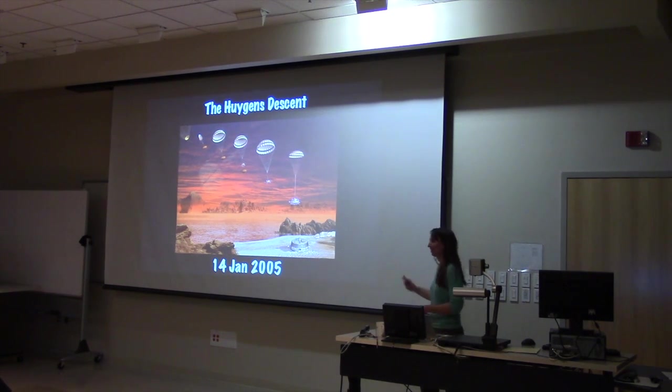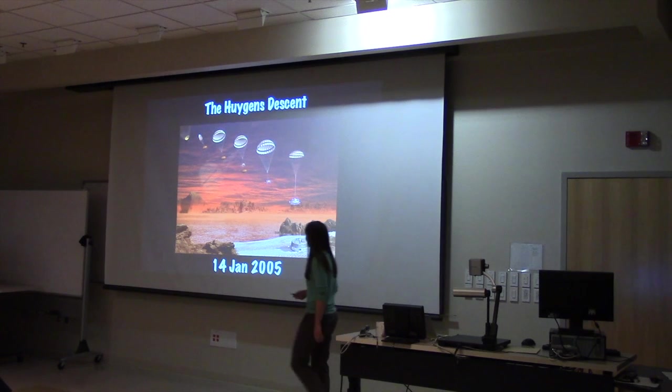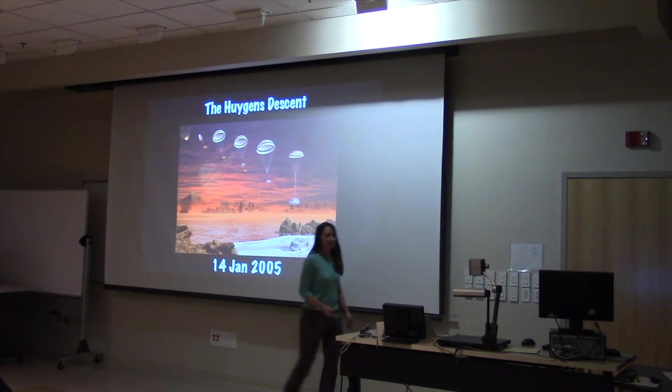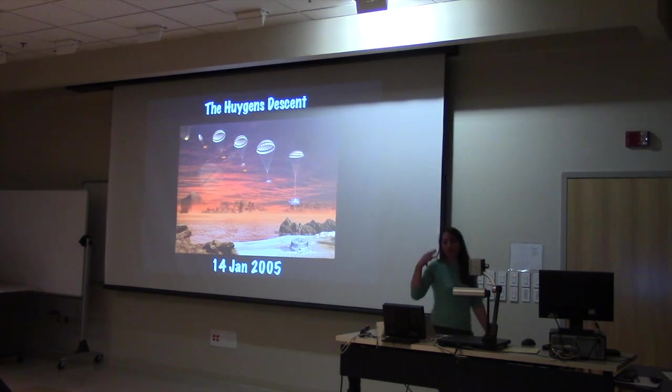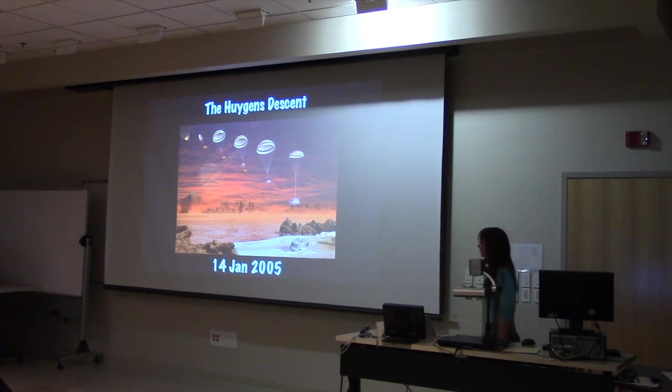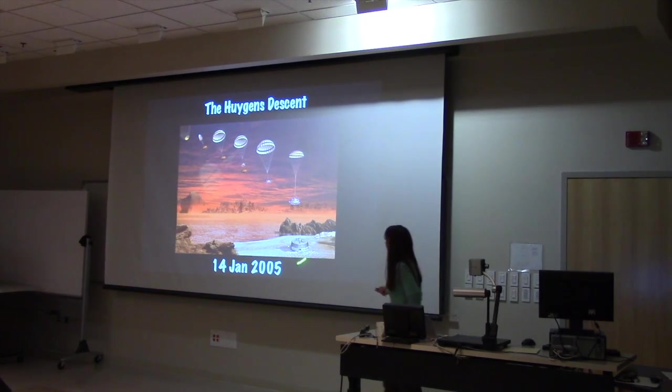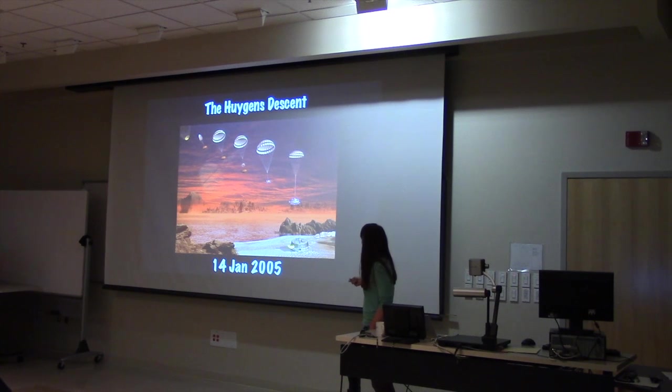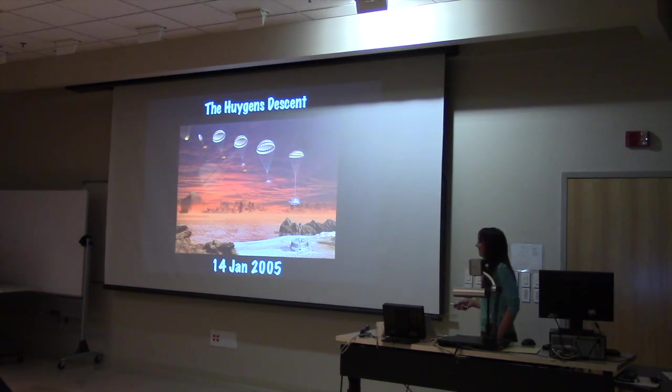This is obviously, hopefully obviously, an artist's rendition of what the surface looked like. And this is kind of what scientists were hoping for or imagining might be what would happen. Seas of methane and ethane. The Huygens probe, it was designed to land in liquid if that happened.